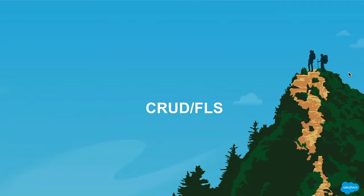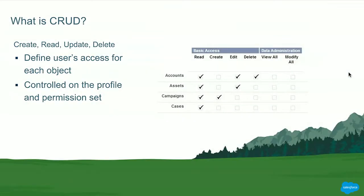CRUD/FLS is an important section because this is the most commonly found vulnerability on AppExchange. CRUD defines object level permissions on the org — create, read, update, or delete. As the image on the right shows, this particular user for the accounts object has access to read, edit, or delete the objects, but he doesn't have access to create. For the campaign object, he has read and create permissions, but he doesn't have edit or delete permissions. That's how object permissions are defined by your admin in your org.